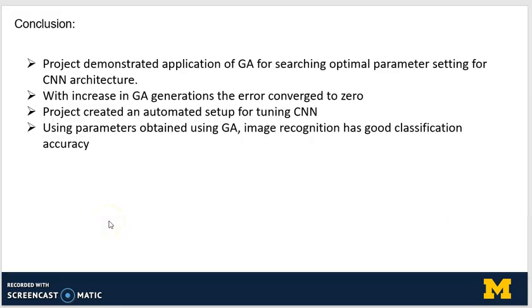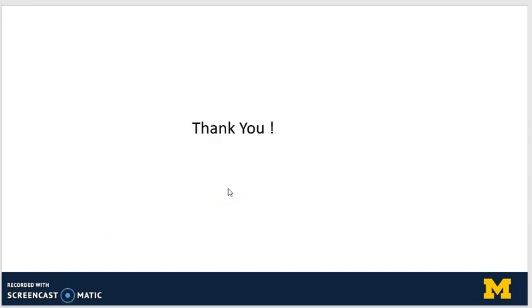In conclusion, this project has demonstrated the application of genetic algorithms for searching optimal parameter settings for convolutional neural network architecture. With increasing GA generations, the error converges to zero. It has created an automated setup for tuning a CNN, and using the parameters obtained via GA, image recognition showed strong classification accuracy — 98.75% for the three-convolutional-layer system. Thank you for attending this presentation, and please let me know if you have any questions.